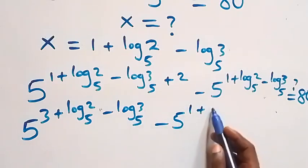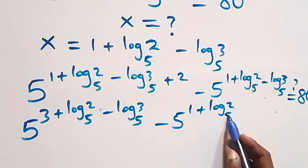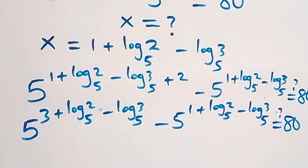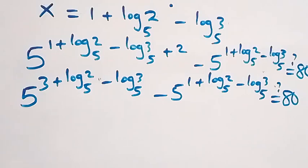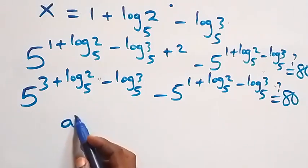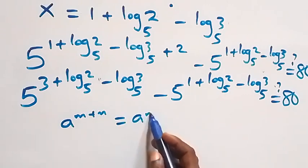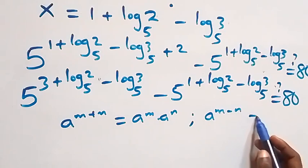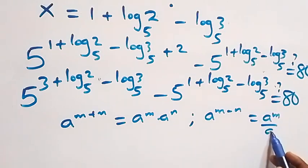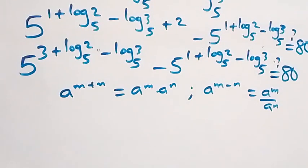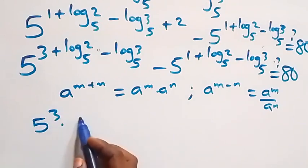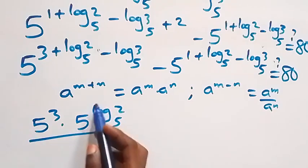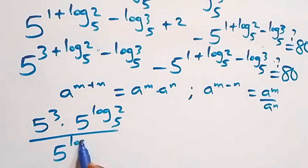So we have 5 raised to power (1 plus log₅2 minus log₅3) equals 80. Applying the law of indices — a raised to power m plus n equals a raised to power m times a raised to power n, and a raised to power m minus n equals a raised to power m over a raised to power n — we get 5 raised to power 3, times 5 raised to power log₅2, over 5 raised to power log₅3.